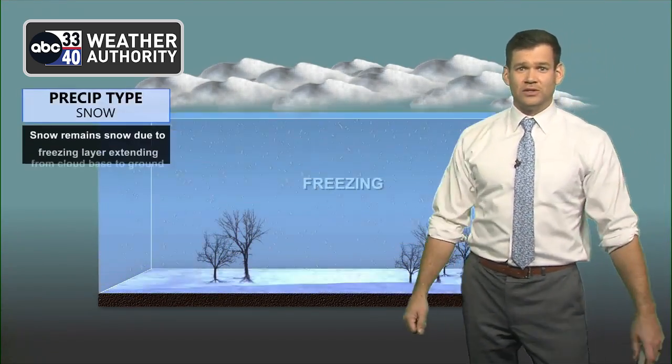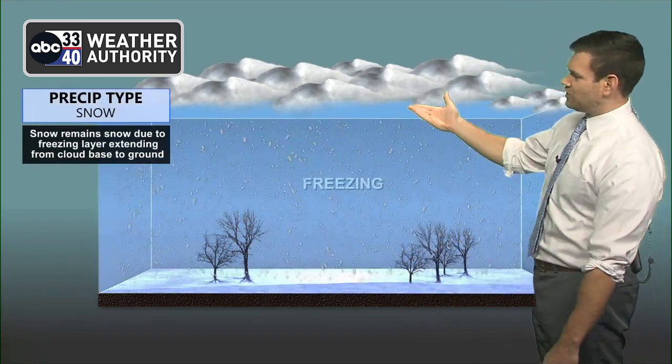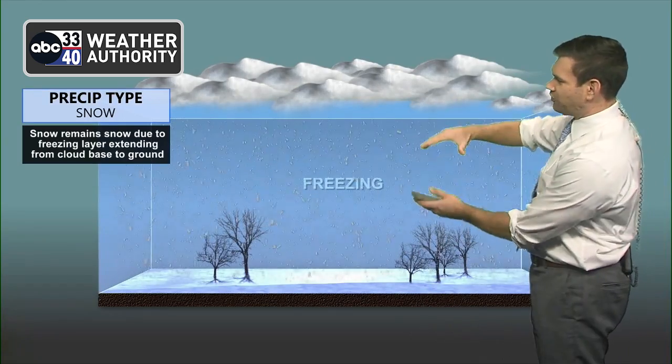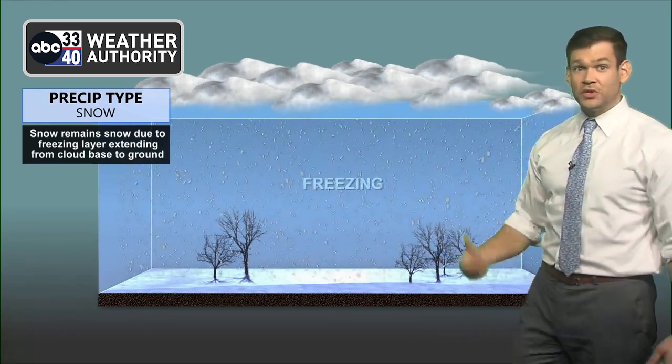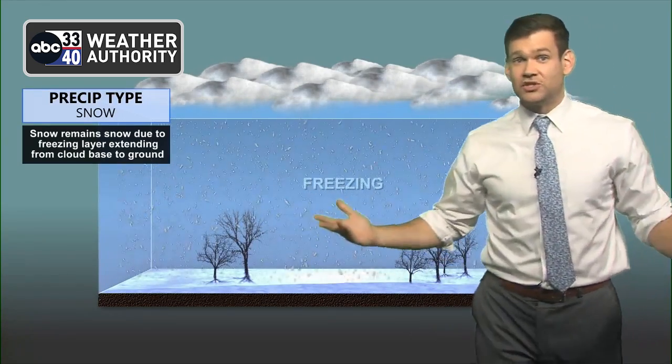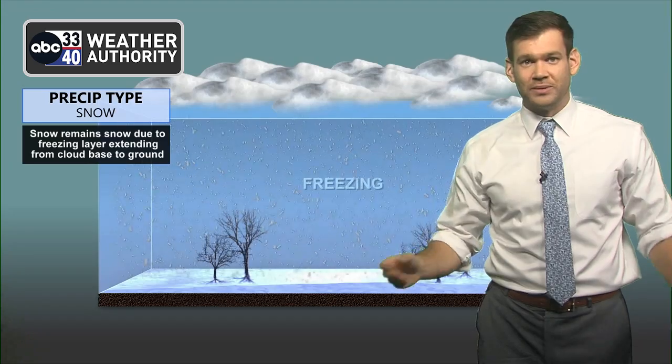Of course, everybody's favorite is snow, and that one's very self-explanatory too. Whether you're standing at the surface or if you're at the base of the cloud, it's freezing through the entire profile. So then you just get the snow, and everybody's happy and it's beautiful — but then there's the freezing rain.